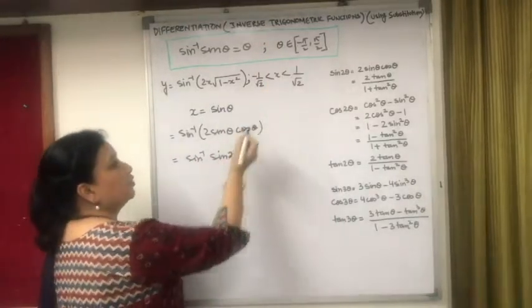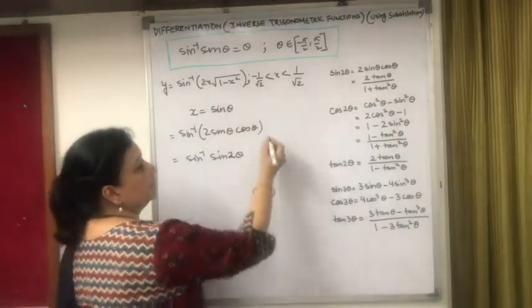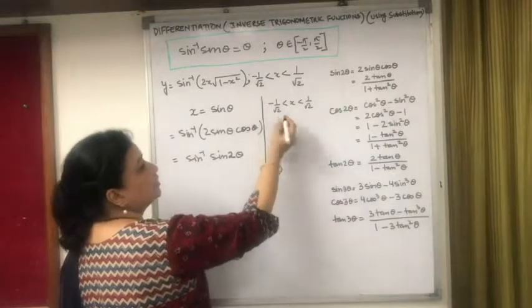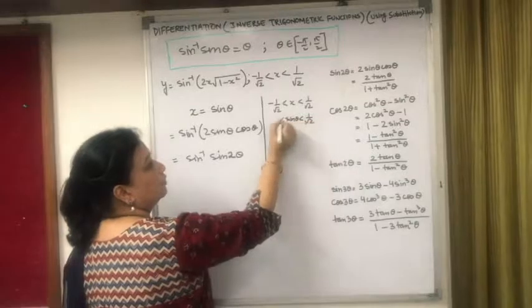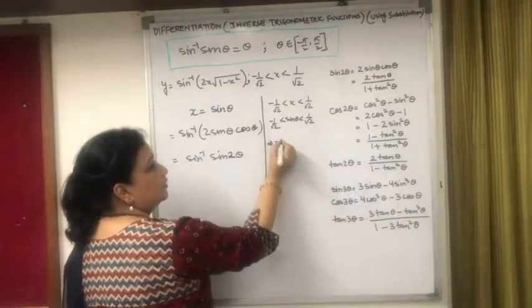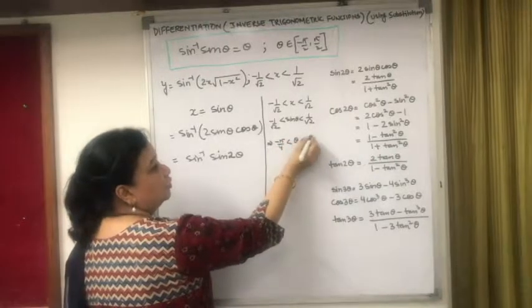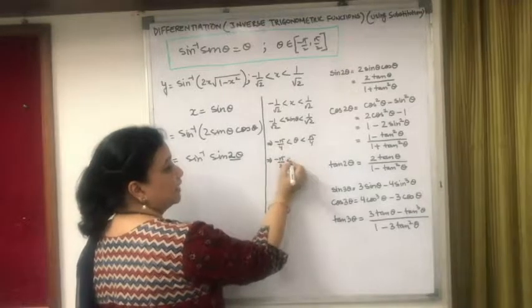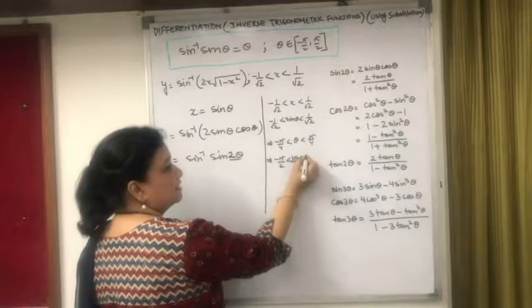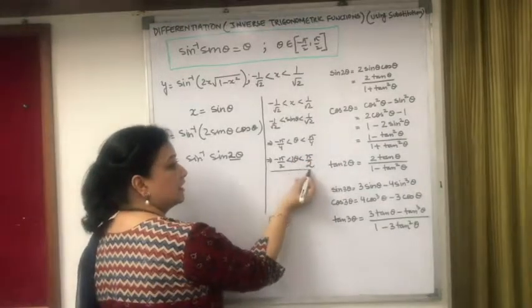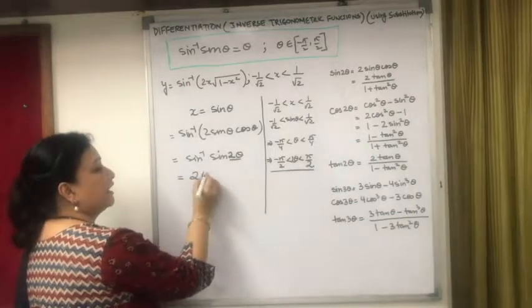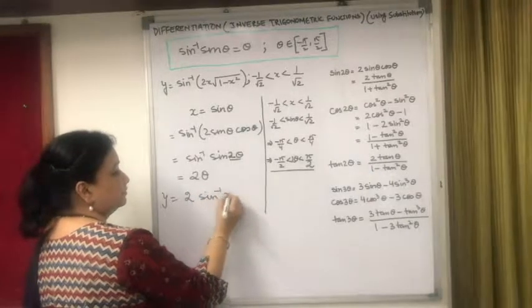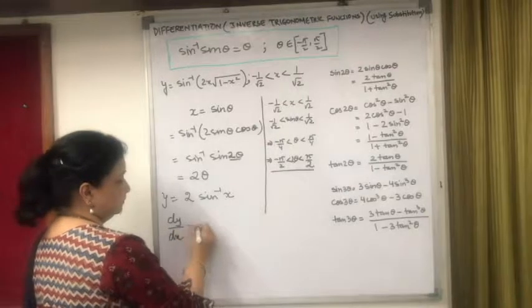Let me check whether 2θ lies in (-π/2, π/2). The condition given is -1/√2 < x < 1/√2. Since x = sin θ, sin θ ∈ (-1/√2, 1/√2), which implies θ ∈ (-π/4, π/4). Multiplying by 2, we get 2θ ∈ (-π/2, π/2). So 2θ satisfies the condition. Therefore y = 2θ = 2 sin⁻¹(x), and the derivative dy/dx = 2 · 1/√(1-x²).